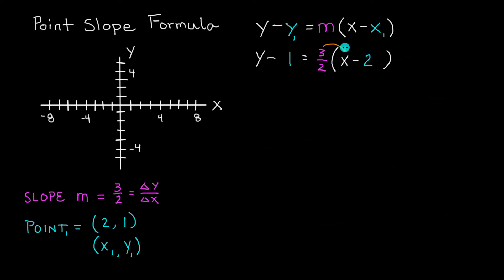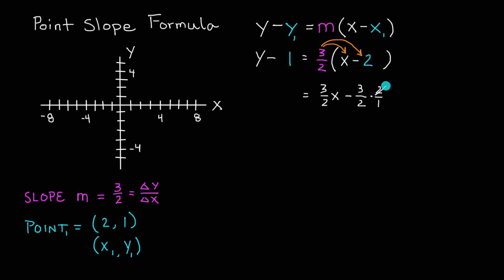Next we distribute this 3 halves into the parenthesis. First, 3 halves times x gives us 3 over 2 x. Then we distribute 3 over 2 into the second term: 3 over 2 multiplied by negative 2, which can be written as 2 over 1. We have a 2 on top and a 2 on the bottom, so this becomes negative 3 over 1, or simply negative 3.